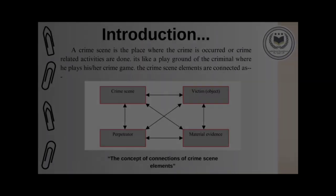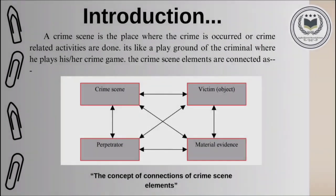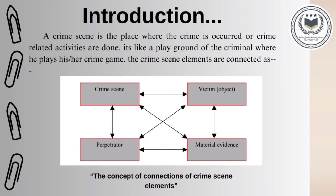Firstly, introduction. Before going to Crime Scene Reconstruction, let's discuss what a crime scene is. A crime scene is a place where an actual crime occurred — overall we can say it is the playground of a criminal where he or she performs their crime. We have four factors in a crime: 1. Crime Scene, 2. A Victim, 3. Perpetrator, and 4. Evidences. These all factors are connected to each other.